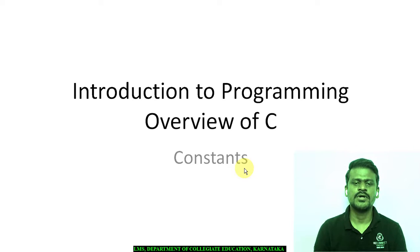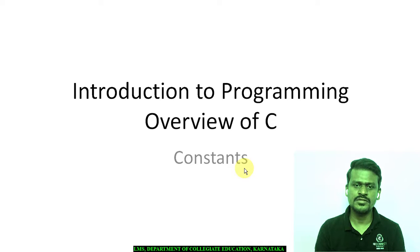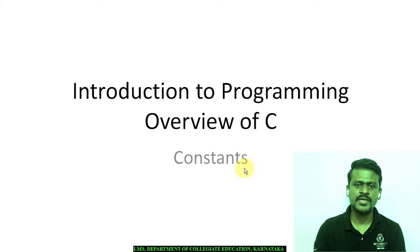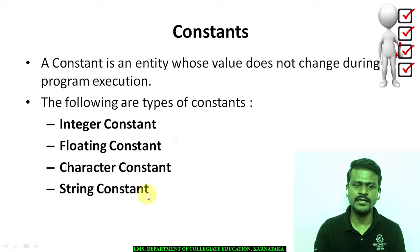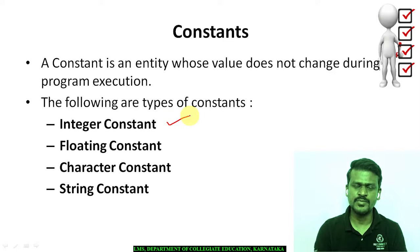Before we move on to this topic, in the previous session we started with Constants. In that, we dealt with some constants like Numeric Constants — decimal number, octal number and hexadecimal number. We learned all three with examples. Today we are going to learn some more constants. We have already seen Integer Constants, Floating, Character and String Constants. In the previous session we completed Integer Constants: decimal, octal and hexadecimal. In today's class we are starting with Floating Constants.